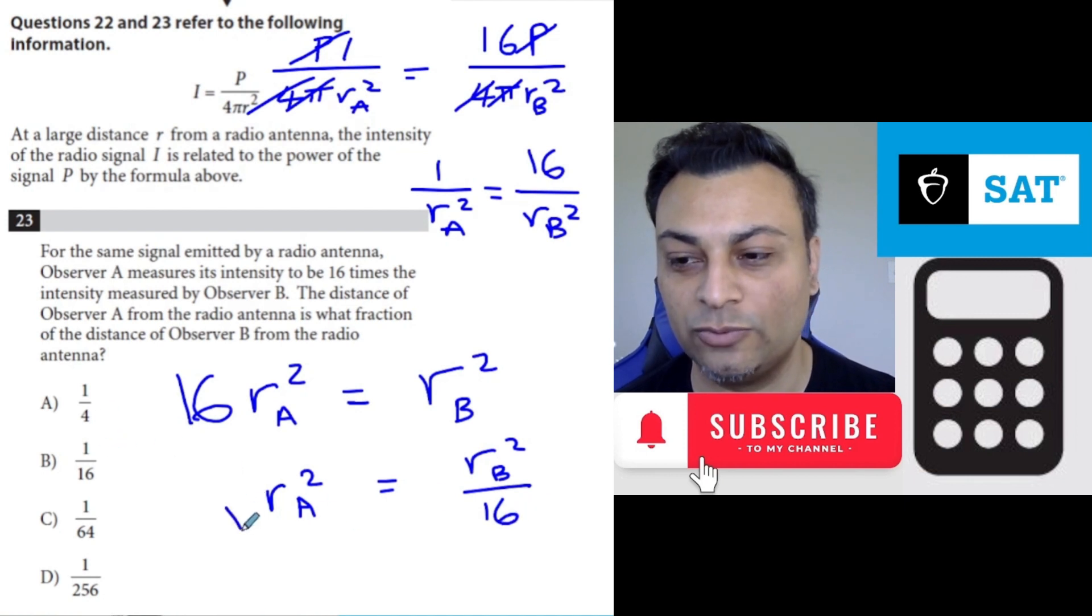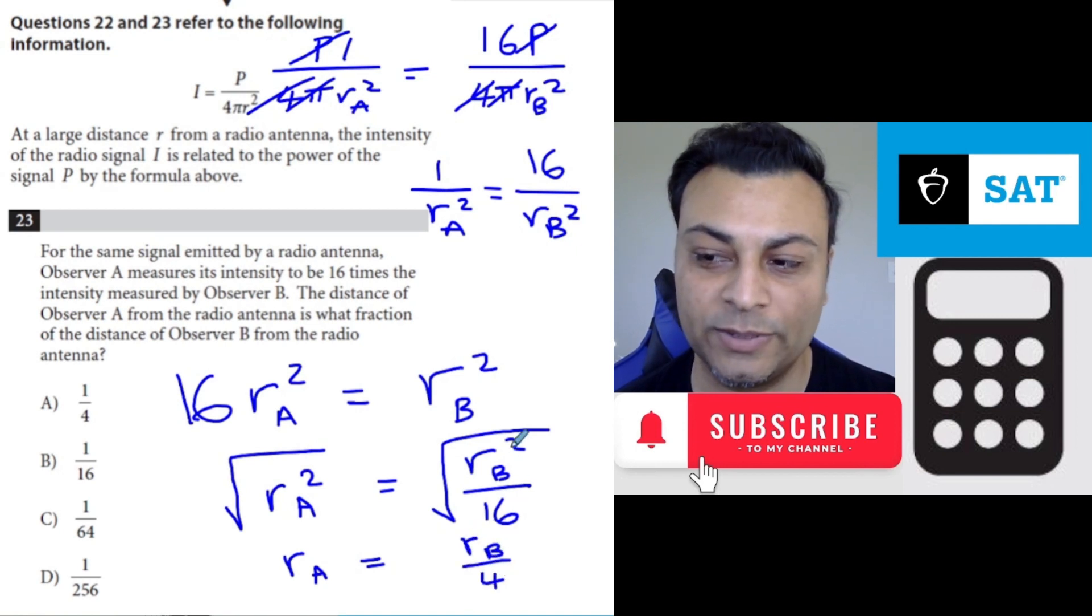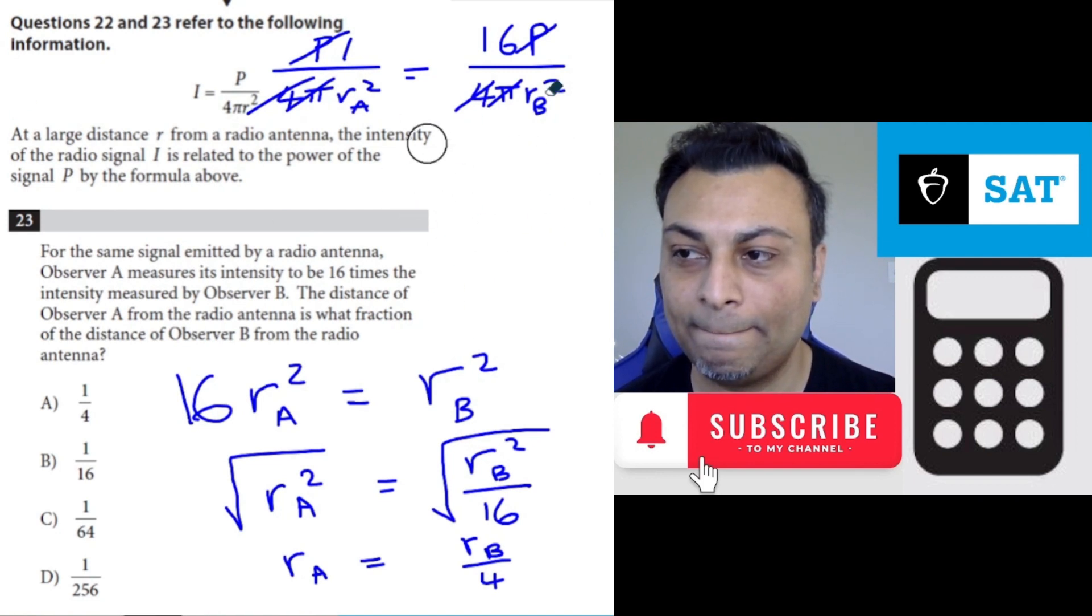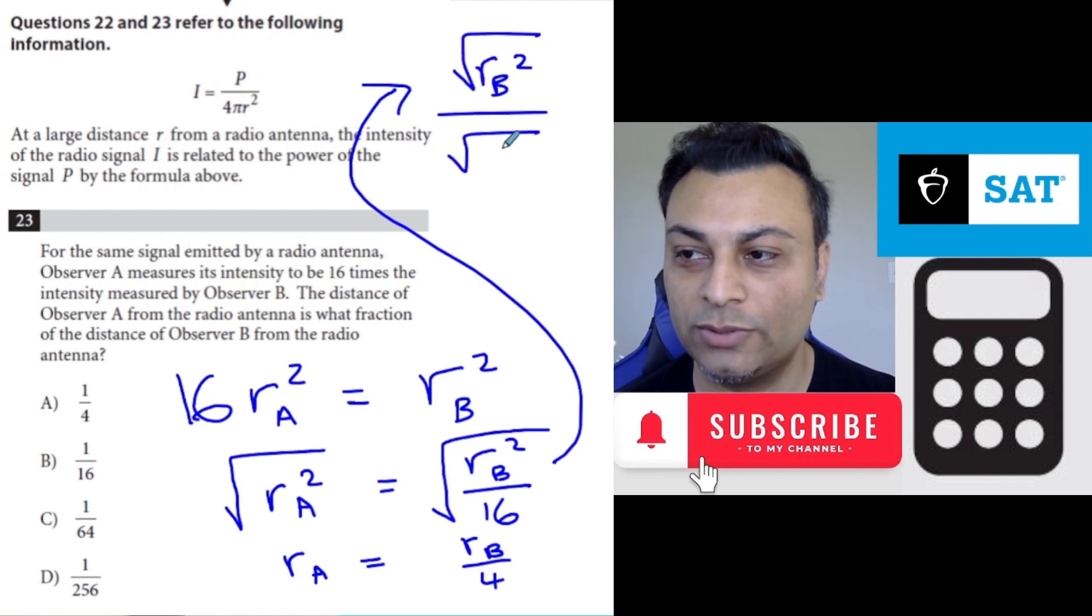But that's not the answer. We have to square root both sides. And you would get ra is rb over 4. Why 4? Because this is actually the same as square root rb squared over square root 16. That's why it becomes rb over 4. So finally we have ra equals one-fourth of rb. This is the same as one-fourth times rb.